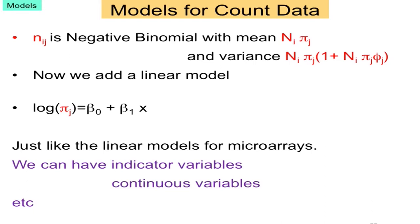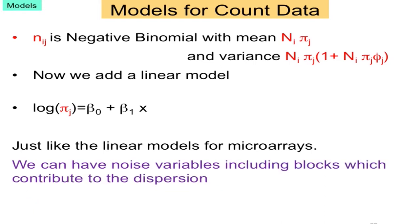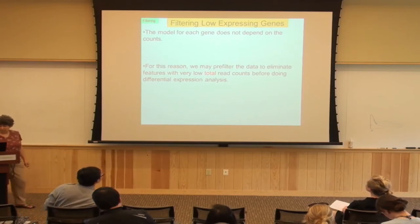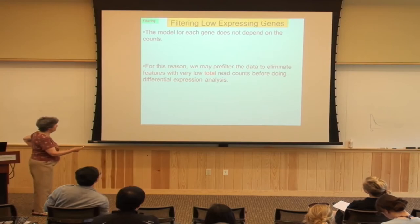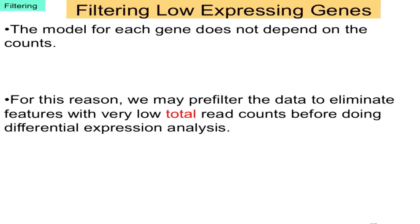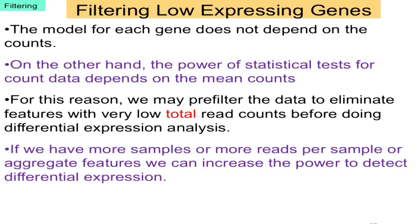The model doesn't actually depend on what the counts are, and for this reason we sometimes pre-filter to eliminate features with very low total read counts — meaning you sum across all samples and if you only have a few counts, you get rid of them. The reason is that the power of the statistical tests is very low when you have low counts. It's kind of like Fisher's exact test — if you only have three possible things that can go into the table, you can't get a lot of power for determining differences.